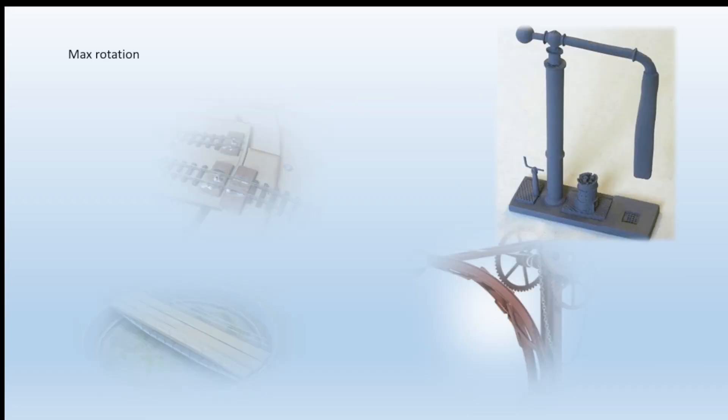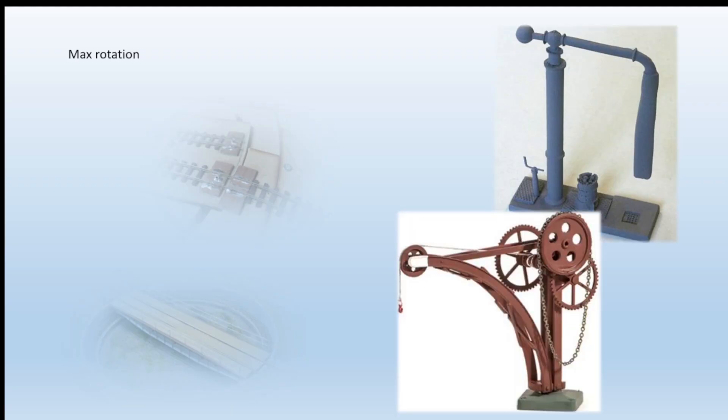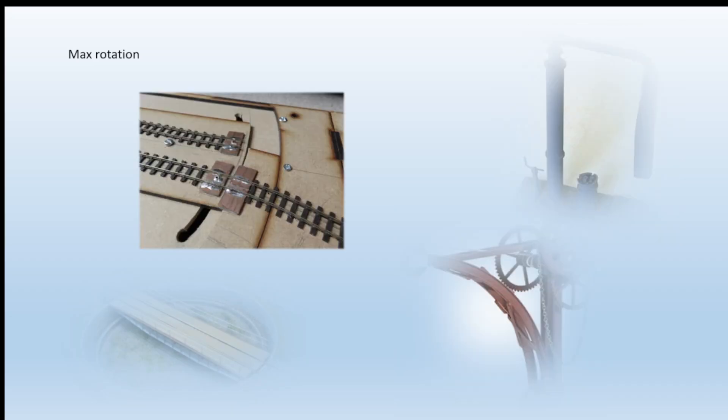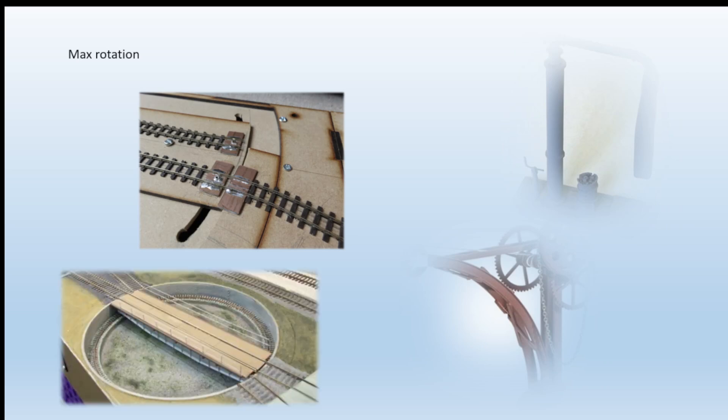We may wish to have a water crane that rotates but maybe only 90 degrees. Similarly, a lifting crane for goods would have a restricted arc of movement, and then there's a sector plate. In the example here we have a sector plate that only has two positions, or it could be a turntable.